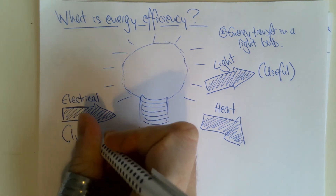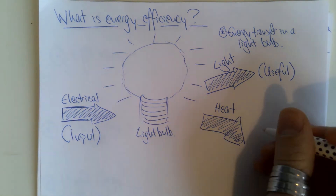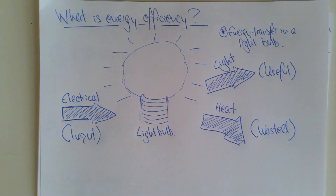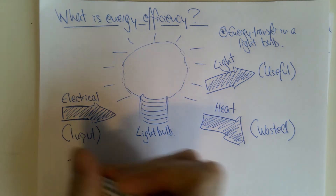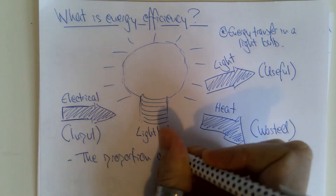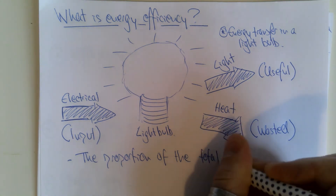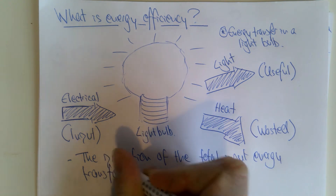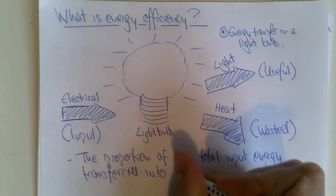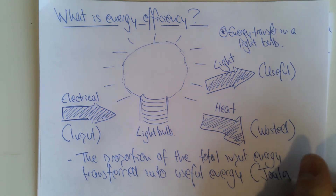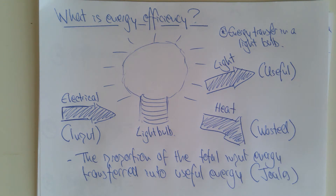The electrical energy transferred into light energy is described as useful energy, because that's what the bulb is for. Touching a light bulb and feeling it hot is not particularly useful — that's wasted energy. Energy efficiency describes the proportion of the total input energy that is transferred into useful energy. In this example, it's the amount of electrical energy transferred into light energy, and we measure energy in joules.